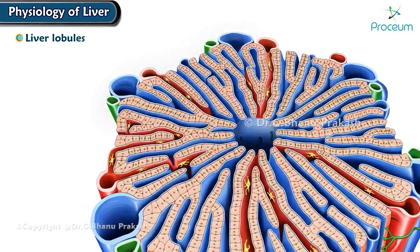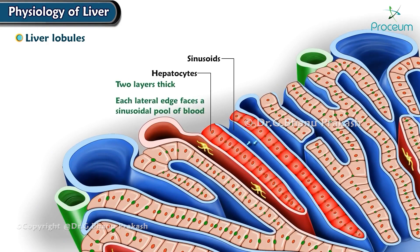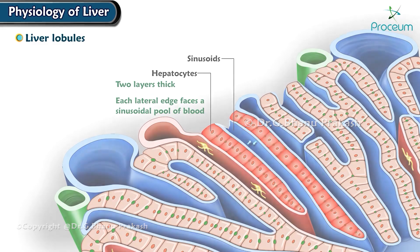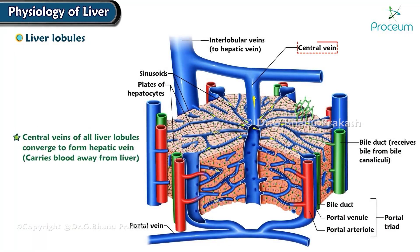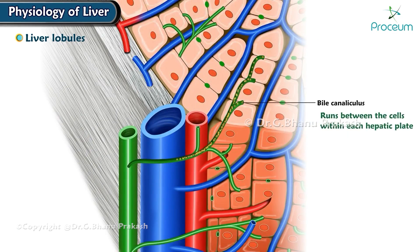The hepatocytes are arranged between the sinusoids in plates two cell layers thick, so that each lateral edge faces a sinusoidal pool of blood. The central veins of all the liver lobules converge to form the hepatic vein, which carries blood away from the liver. A thin, bile-carrying channel called a bile canaliculus runs between the cells within each hepatic plate.